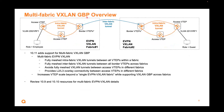Now let's move on to multi-fabric. In 10.11, we add support for multi-fabric VXLAN GBP. Multi-fabric means fabric 1 on the left and fabric 2 on the right. Intra-fabric tunnels between all VTAPs within a fabric are still fully meshed in orange. There is now a blue inter-fabric VXLAN tunnel between the fabrics, avoiding fully meshed tunnels between access VTAPs in different fabrics. Border VTAPs create the tunnels between the fabrics, providing both layer 2 and layer 3 connectivity. The main purpose is increased VTAP scale across two fabrics.